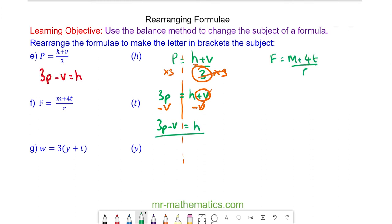In question f we're going to make t the subject. We begin by multiplying both sides by r then these will cancel. So we have fr minus m equals 4t.